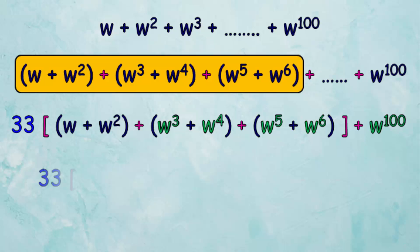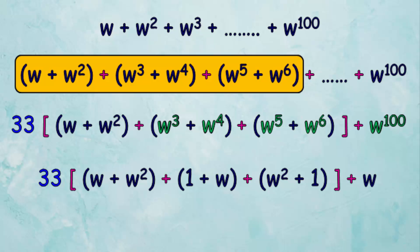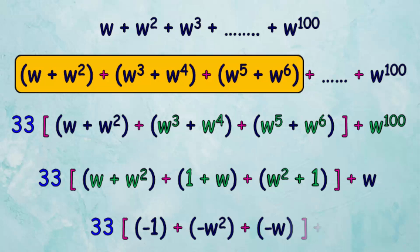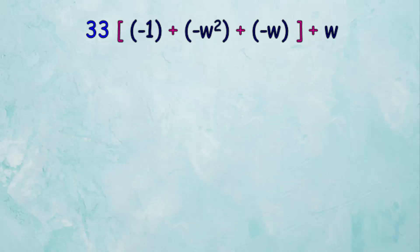By substituting algebraic terms, we get 33 multiplied by the expression: omega plus omega squared plus 1 plus omega plus omega squared plus 1, then add omega. Simplifying by substituting known expressions, we get 33 multiplied by: negative 1 plus negative omega squared plus negative omega, plus omega.